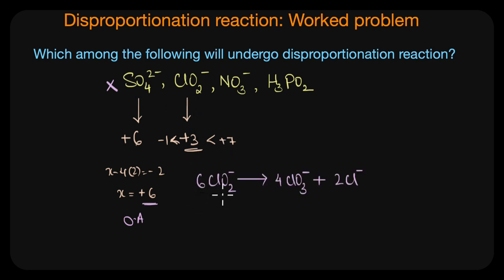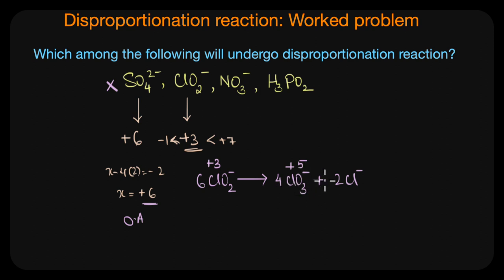The disproportionation reaction of ClO2⁻ looks like this: 6ClO2⁻ disproportionates to 4ClO3⁻ plus 2Cl⁻. The plus three oxidation state of chlorine in ClO2⁻ changes to plus five in ClO3⁻ and minus one in Cl⁻. So for ClO2⁻, the answer is yes — it undergoes disproportionation.